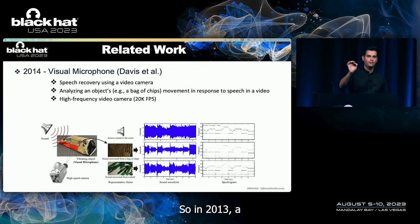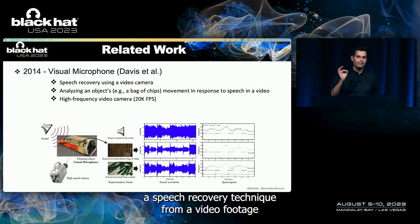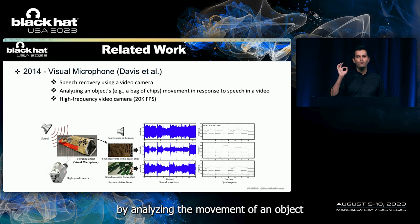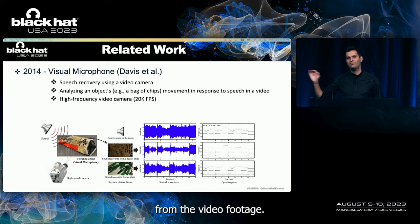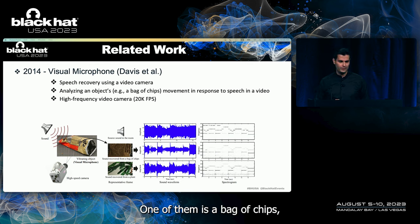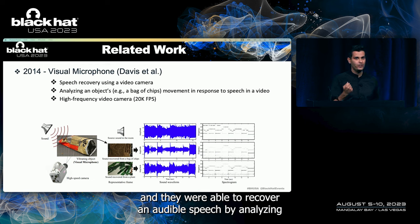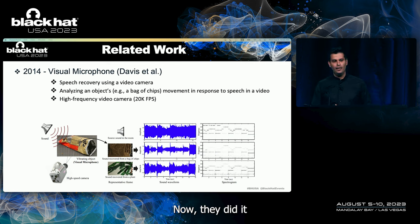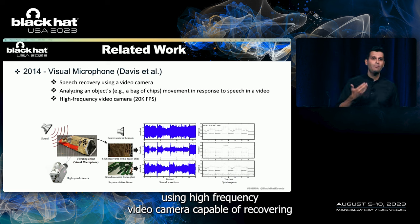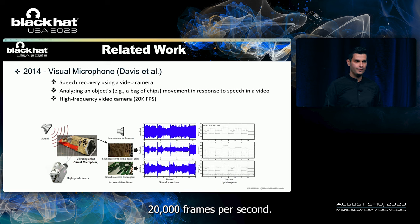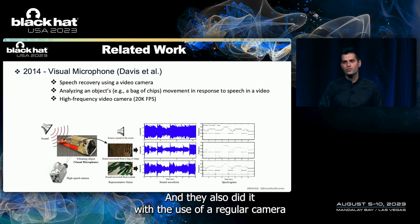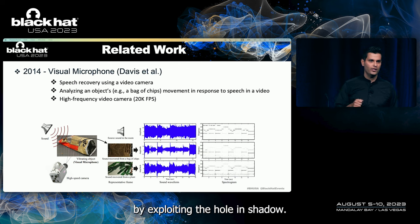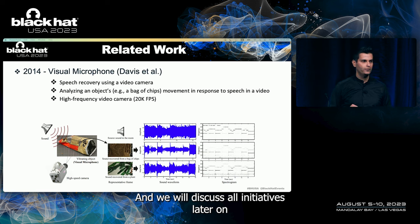In 2013, a group of researchers from MIT presented the visual microphone — a speech recovery technique from video footage by analyzing the movement of an object. They demonstrated it on various objects, one of which was a bag of chips, and were able to recover audible speech by analyzing the movement of that bag of chips. They did it using a high-frequency video camera capable of recovering 20,000 frames per second, and also with a regular camera by exploiting the rolling shutter. We will discuss rolling shutters later in this talk.